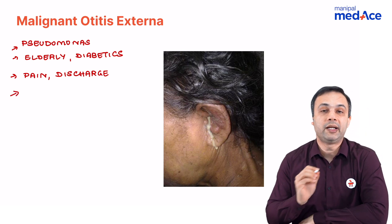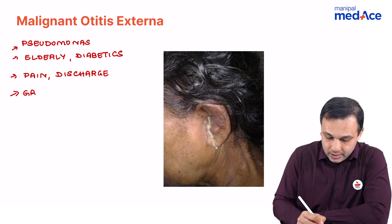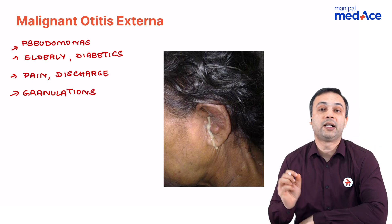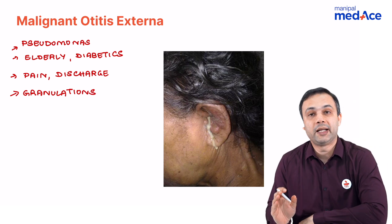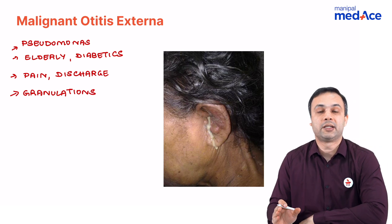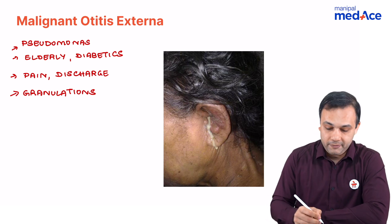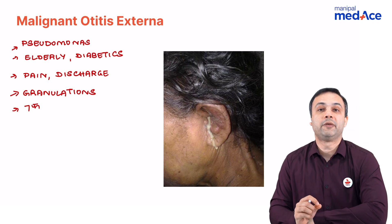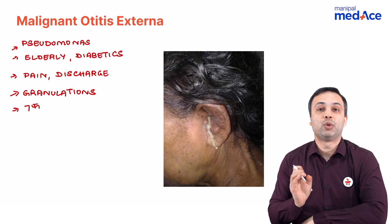Another key feature of malignant otitis externa is granulations in the external auditory canal at the bony-cartilaginous junction. Regarding cranial nerve involvement, the seventh cranial nerve is the most commonly affected in malignant otitis externa.